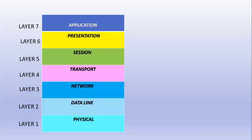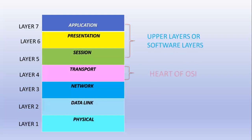You have to memorize this in the correct sequence, and for that we can use mnemonics. If you want to memorize from layer seven to layer one, the mnemonic is: All People Seem To Need Data Processing. Or if you want to memorize from layer one to seven, use: Please Do Not Throw Sausage Pizza Away. The top three layers — application, presentation, and session — are upper layers or software layers. The transport layer is called the heart of OSI, and the bottom three layers are called lower layers or hardware layers.